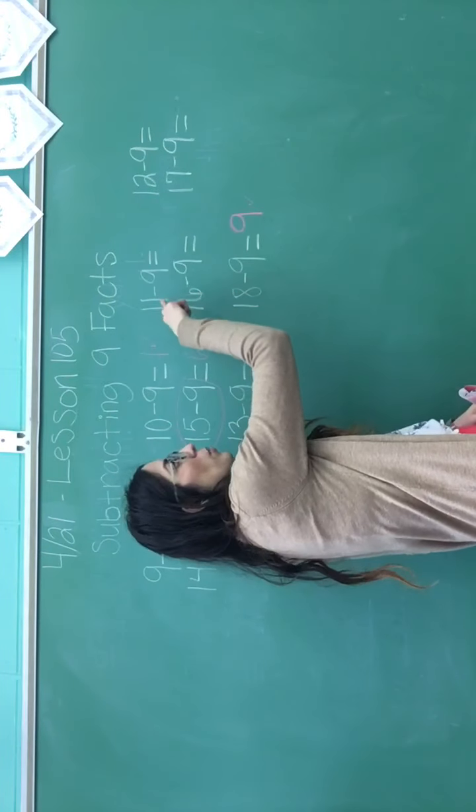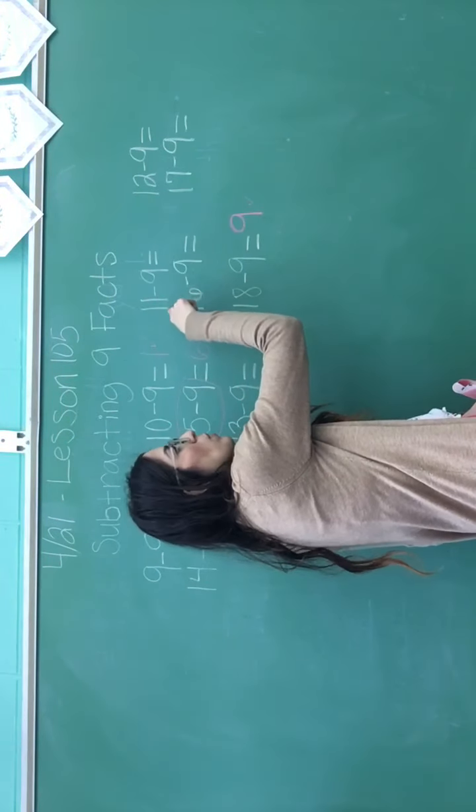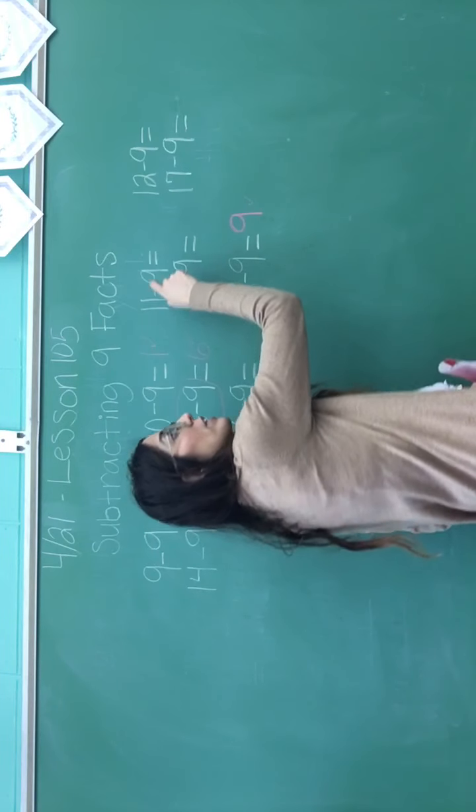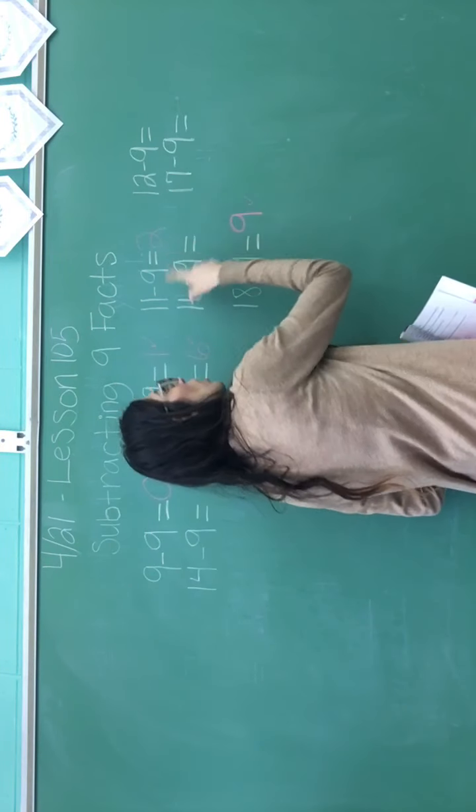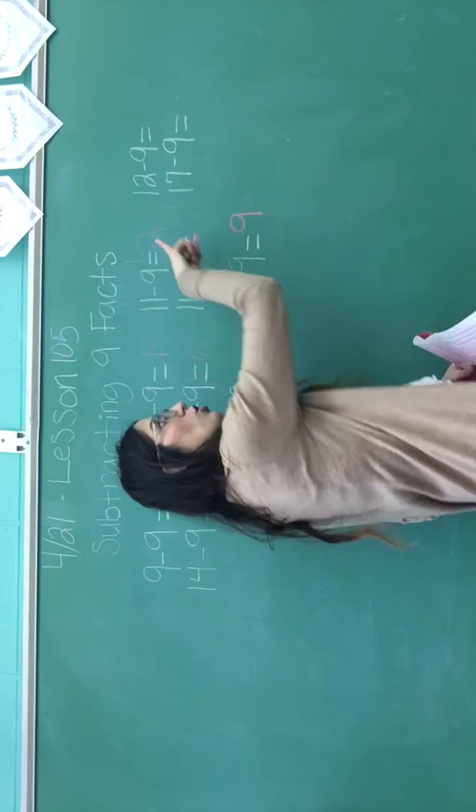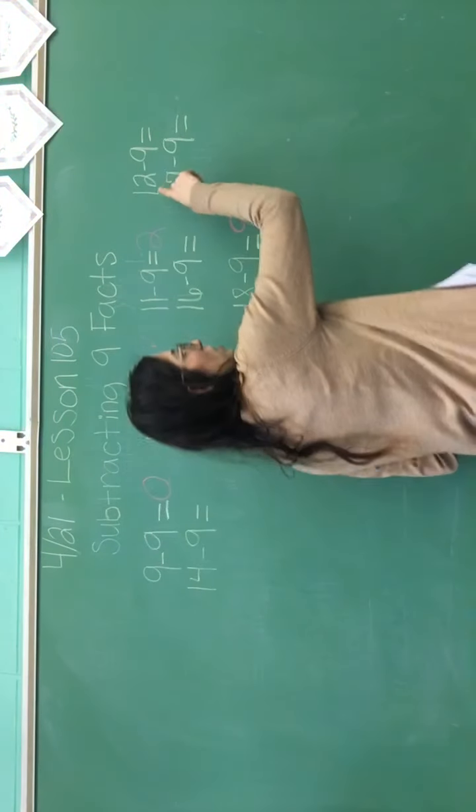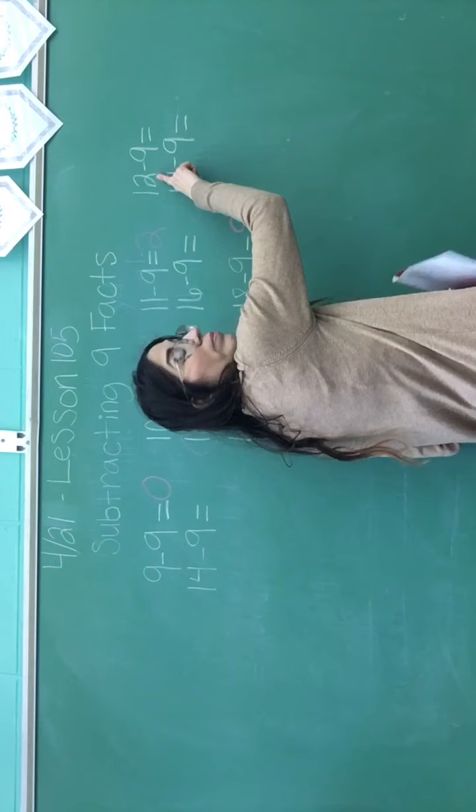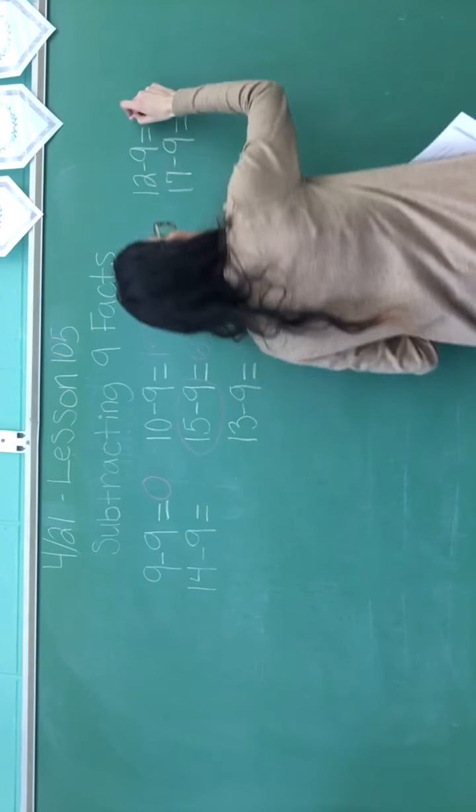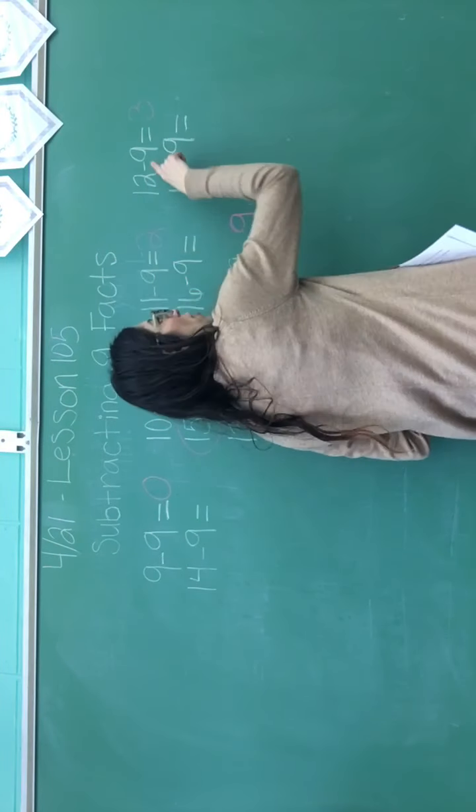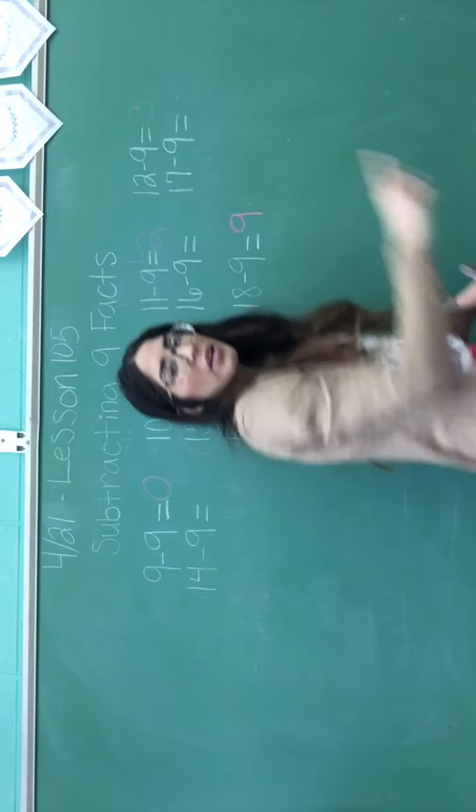Let's try this one. So we have the 11, right? So what's one plus one? Good. Two. 11 minus nine equals two. Very good. Let's try this one. One plus two. That's right. Three. So 12 minus nine equals three. Very good. So the minus nine facts are so easy.